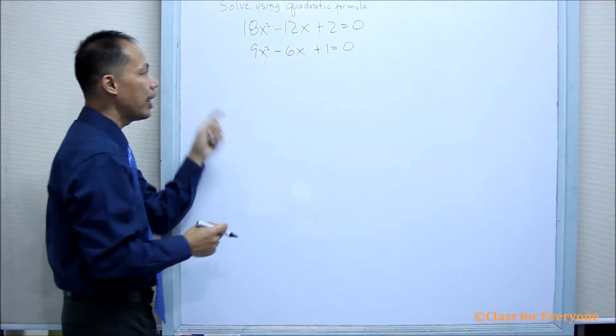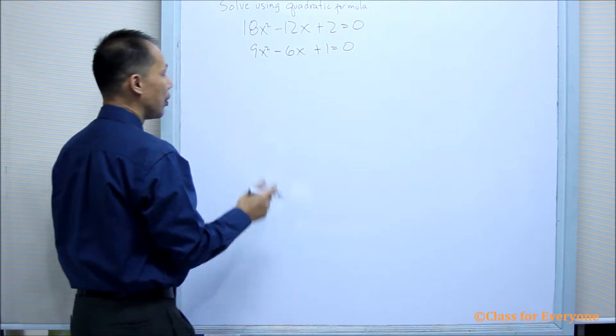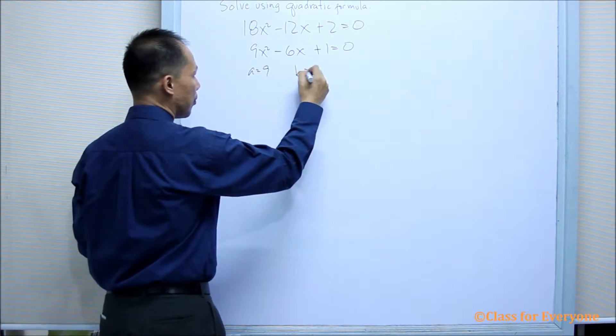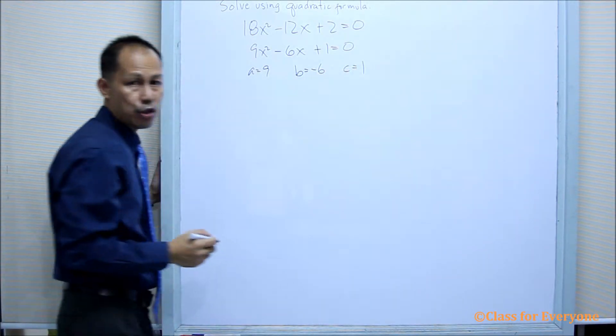This makes the values of A, B, and C smaller and easier to handle. Thus, the value of A is 9, B is negative 6, and C is positive 1.